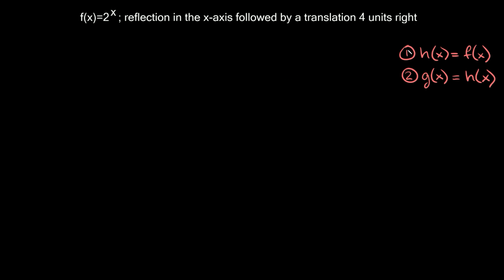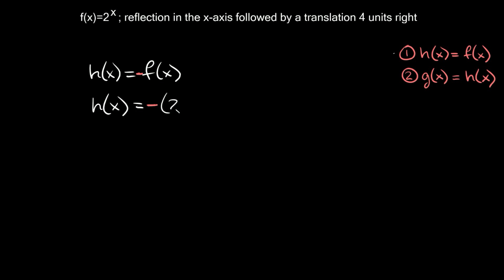To solve these there are basically two steps. The first step is writing h of x is equal to f of x. Now let's write and apply the first transformation to f of x. We're going to say h of x is equal to a reflection in the x-axis. To reflect a function in the x-axis, you just have to multiply the whole function by a negative sign out in front. So we get negative 2 raised to the x. That's the first transformation.